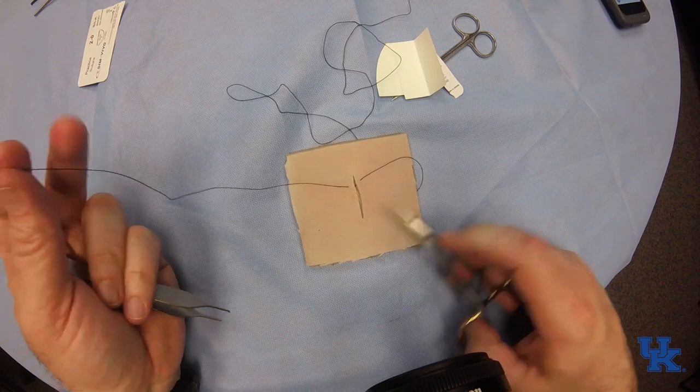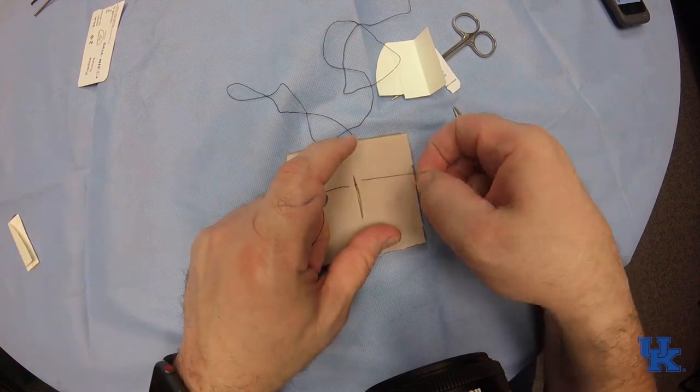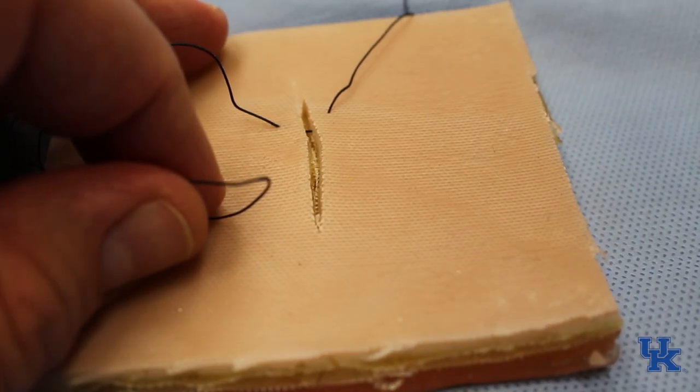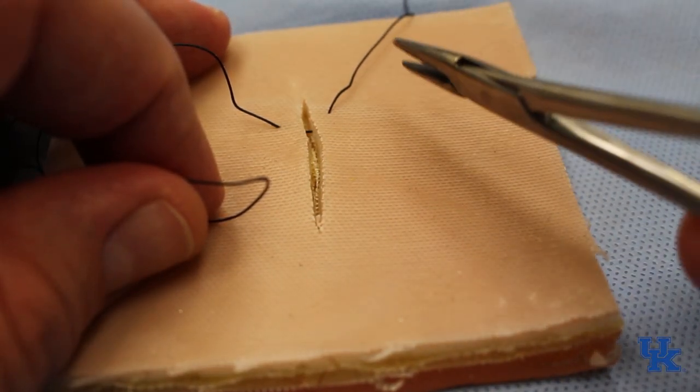Now you've thrown a simple stitch. Now you have to tie the stitch. So you want to pull the string through, and the first thing we're going to do is a simple instrument tie.